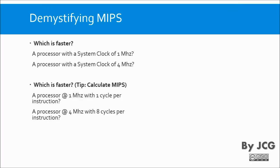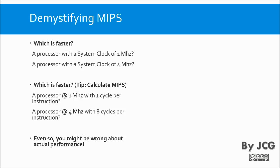In theory, the processor working at a lower clock speed is actually faster than the one working at a higher clock speed but taking more time to execute each instruction. Even so, this is not the only thing you have to consider to determine if one microcontroller is faster than another.